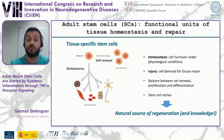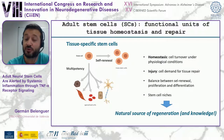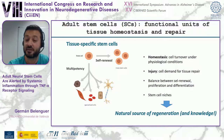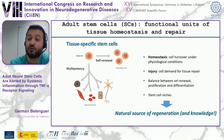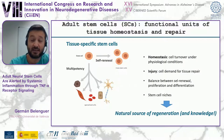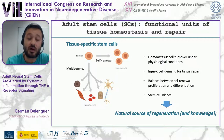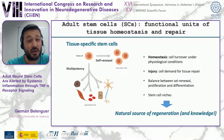These cells are responsible for cell turnover under physiological conditions and also to fulfill cell demand for tissue repair. These functions require a fine-tuned balance between cell renewal, proliferation, and differentiation, greatly regulated by the stem cell niche and surrounding signals. Therefore, these cells are not only the natural source of regeneration but also a great opportunity to understand how to produce new cells. The more we know about these stem cells, the more doors will open for future therapeutic opportunities.